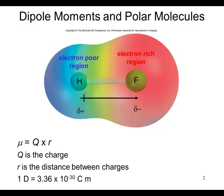It leaves behind a slight positive charge on the electron-poor region around the hydrogen atom. In this case, fluorine, of course, is more electronegative. It pulls the electrons toward it.